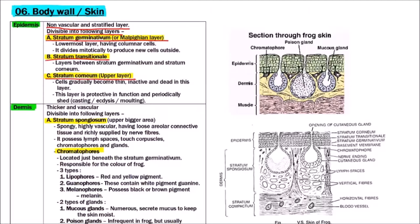The stratum germinativum or Malpighian layer is the lowermost layer. We can observe the skin here: epidermis and dermis. These two are forming the skin, and this is the lowermost layer, that is stratum germinativum.